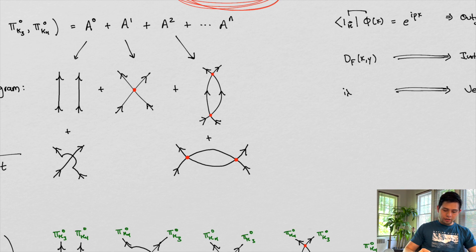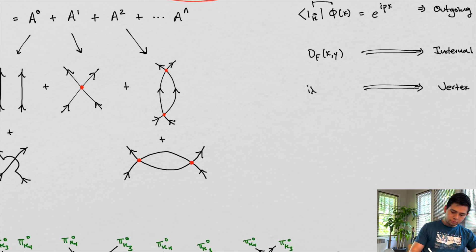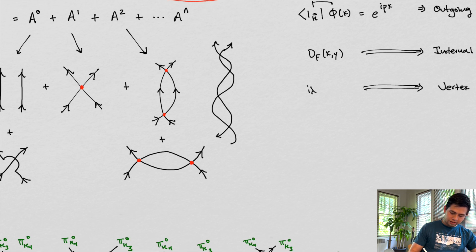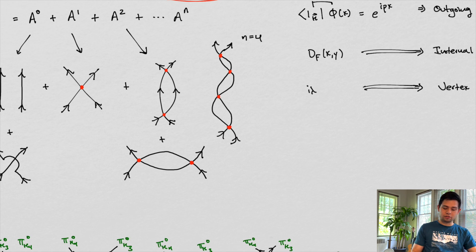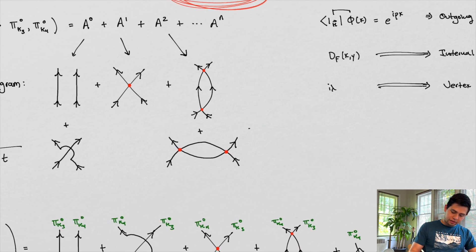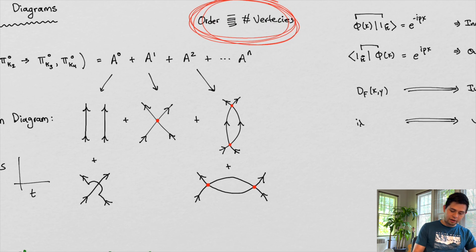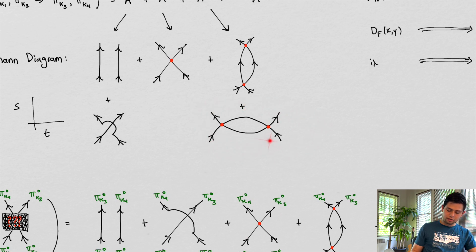An nth-order term — so something that might look like this: we have an interaction here, an interaction here, an interaction here, and an interaction here. So this is a term in which n equals one, two, three, four — that is a potential Feynman diagram in which n equals four, there are four interactions, or this is a fourth-order approximation. Here's another example of what a second-order term might look like. So the order of the approximation we're calculating is equal to the number of vertices in the Feynman diagram.